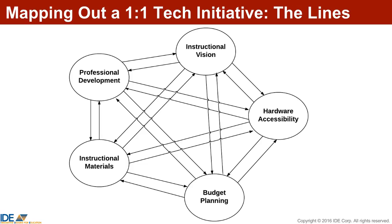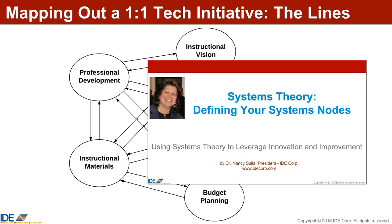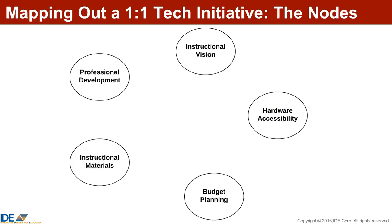Mapping out a system begins with identifying the components represented by nodes in a systems diagram. If you're new to this, first watch my video entitled Systems Theory: Defining Your Systems Nodes. In this video, I'll be building a systems diagram for a one-to-one technology initiative aimed at innovating and improving student achievement. The concepts, however, apply to any systems diagram. Given systems diagrams are complex, I'm only representing five of the components here. Your systems map may have different nodes based on the ones you selected to study, but the concepts for the mapping are the same.